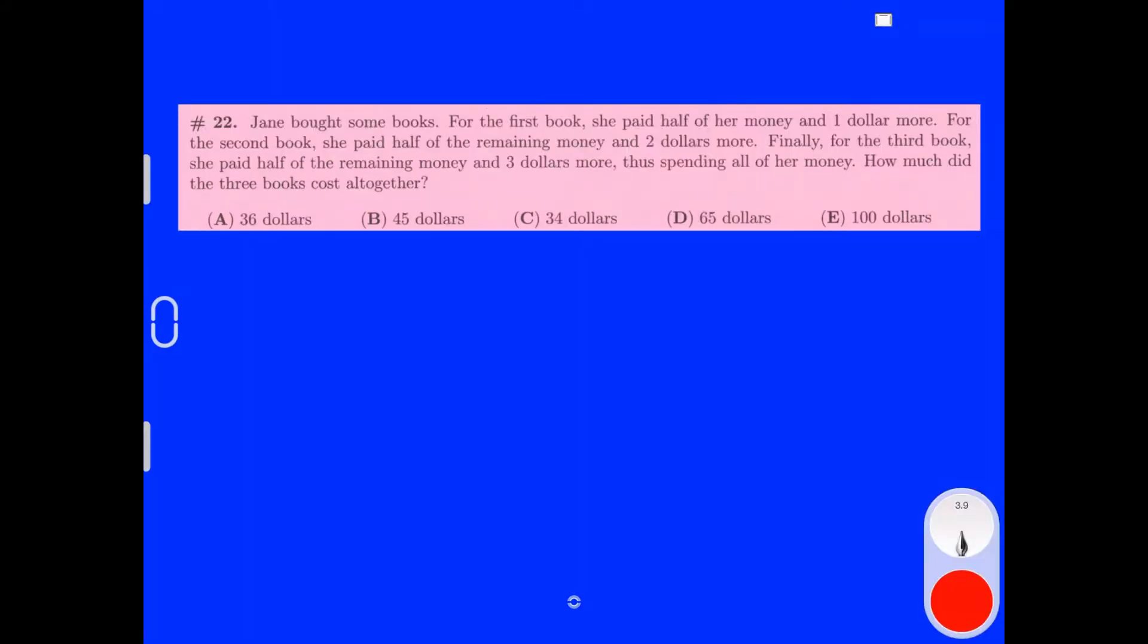Jane bought some books. For the first book, she paid half of her money and $1 more. For the second book, she paid half of the remaining money and $2 more. Finally, for the third book, she paid half of the remaining money and $3 more, thus spending all of her money. How much did the three books cost altogether? If we work backwards, we can get this answer. Let's start with spending half of her remaining money and $3 more. That would be $3 plus 1/2x equals x. If we simplify this, we will get 3 equals 1/2x, and if we simplify this more, we will get 6 equals x. We would have $6 for the third book.